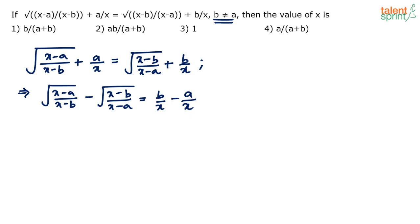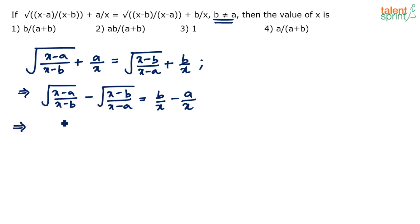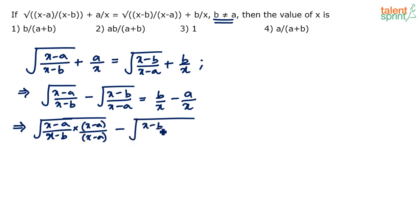The right-hand side is simply (b−a)/x, but the left-hand side is complex — the LCM would be √((x-b)(x-a)). Instead, for the first term multiply both numerator and denominator by (x−a), and for the second term multiply both numerator and denominator by (x−b).